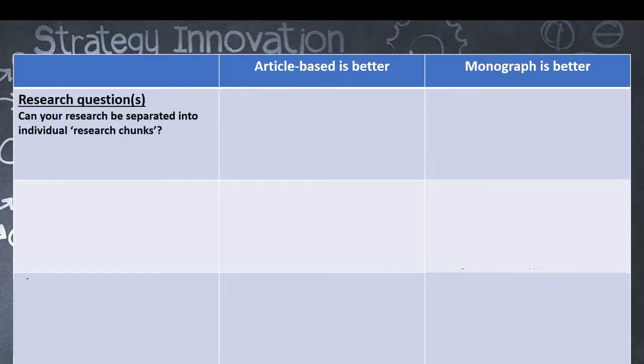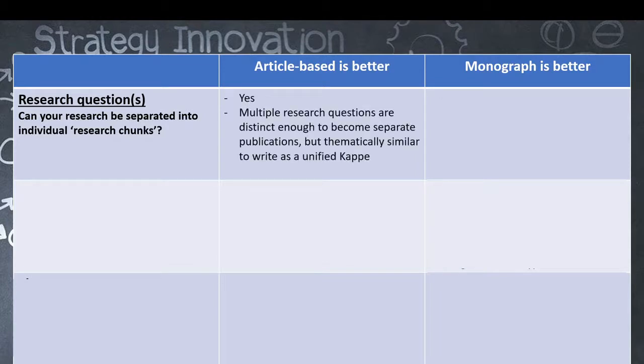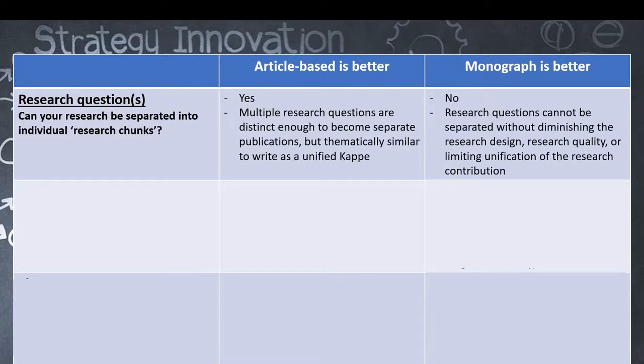So we can start out by asking what is the research question or the research questions you have and how easily can you break those questions down into individual researchable chunks? If you can break your research down into researchable chunks because you have multiple research questions that are distinct enough to become separate publications but thematically similar enough to write as a unified kappa, the article-based thesis is a good idea. Whereas if you cannot break your research questions apart into individual chunks, you might be running the risk in doing so of diminishing your research design, the research quality, or even limiting how you can unify all of those ideas to make a research contribution at the end. A monograph might be better. So if you find it difficult to really break your ideas apart, look towards the monograph.